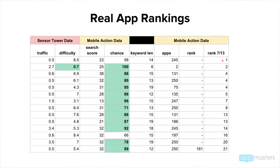Now in my previous video I said Mobile Action, from what we can gather, has the most accurate data. Because on Sensor Tower, when it comes to Google Play, every single keyword has a really high difficulty score, as you can see right here. Based off my data, because our two previous clients were able to rank really high for these keywords, I concluded Mobile Action has the most accurate data.